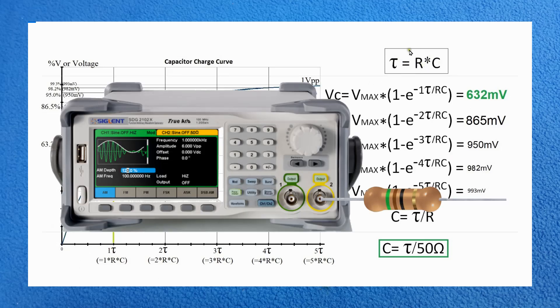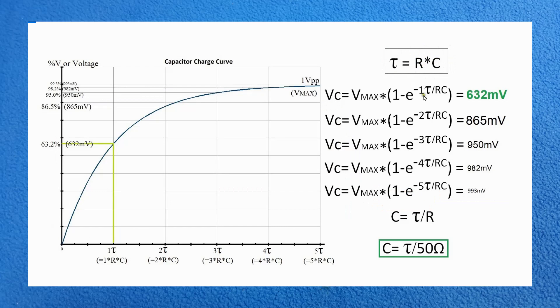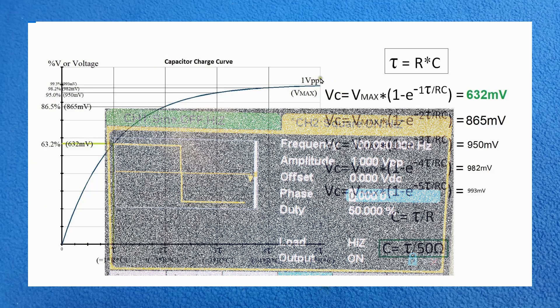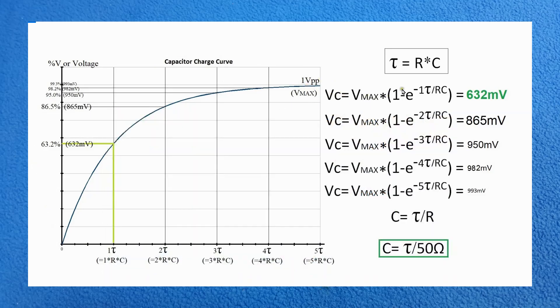This short period of time is tau and equals the internal resistor of the function generator times the capacitor. The voltage in the capacitor is VC = VMAX × (1 - e^(-t/RC)). Don't worry, don't complicate with mathematics - I will show you.